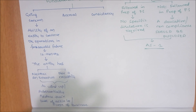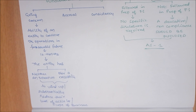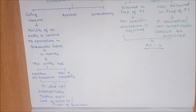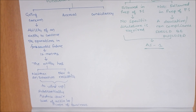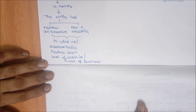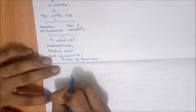In summary: going concern is the ability of an entity to continue its operations in the foreseeable future — minimum 12 months. The entity has neither any intention to wind up, nor is it under any necessity or pressure to curtail the majority of its activity or scope of business. Many students know what going concern is, but the understanding of why it is important is often lacking.